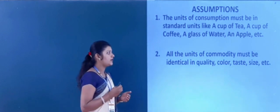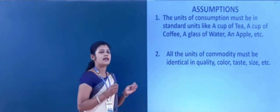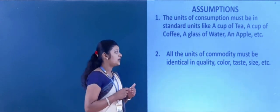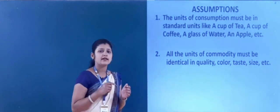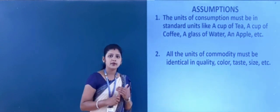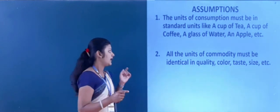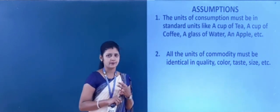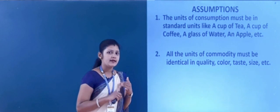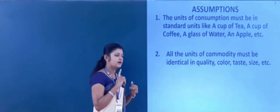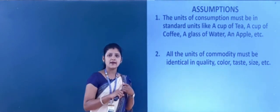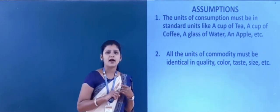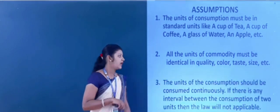The second assumption is: all the units of the commodity must be identical — meaning the same. All the units of the commodity that the consumer is going to consume must be identical in quality, color, taste, size, etc. Then only the law of diminishing marginal utility is applicable.